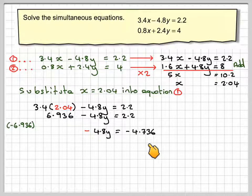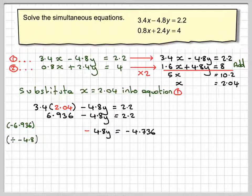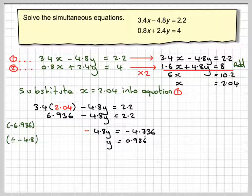And then we'll divide through by minus 4.8, so we're going to get 0.986 recurring.